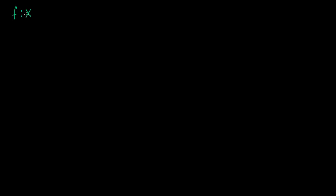I've got a function f, and it's a mapping from the set X to the set Y. Let's say for the sake of argument that f is invertible. What I want to know is, what does this imply about this equation right here?